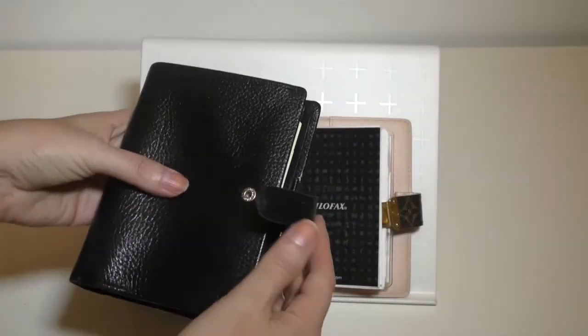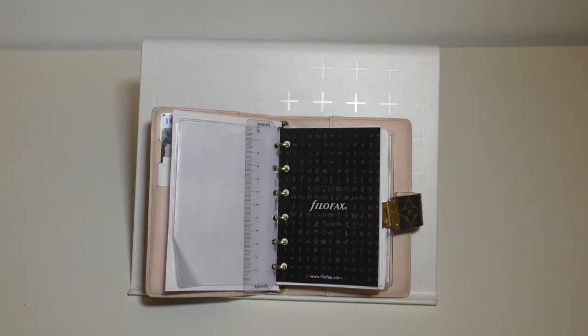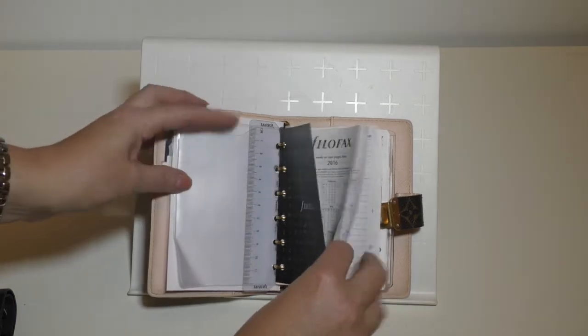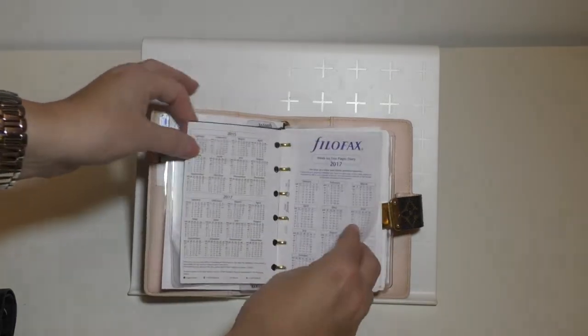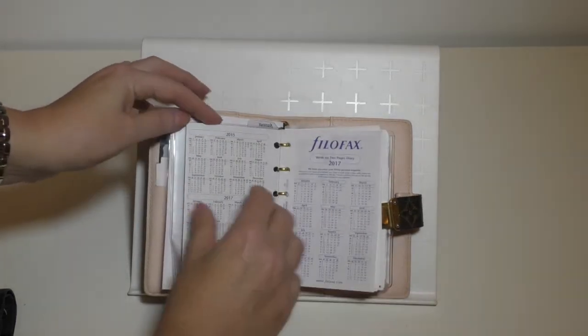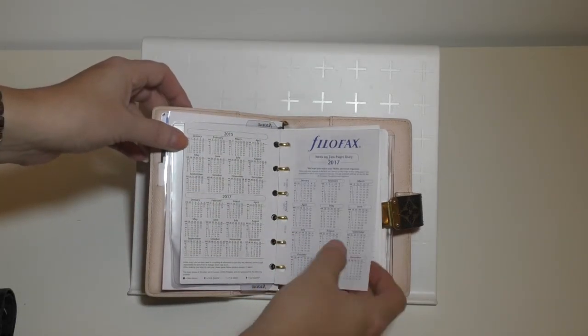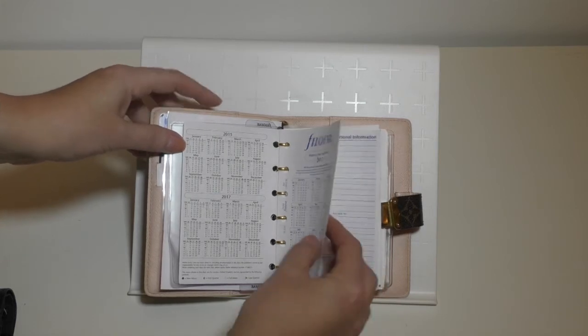This was great as a wallet because it's got the pocket where you could put cash. I still really like this and I probably will switch out throughout the year, but I like the Koala for travel. The Filofax pocket calendar fit beautifully. You've got my 2016, my 2015, and of course my 2017, which is the week on two pages diary that I'm using in this.